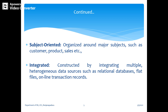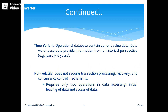A data warehouse is integrated — constructed by integrating multiple heterogeneous data sources such as relational databases, flat files, or online transaction OLTP records. Data cleaning and data integration techniques are applied to ensure consistency in naming conventions, encoding structures, and attribute measures. That is why a data warehouse is called integrated.